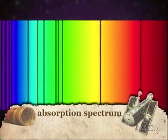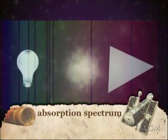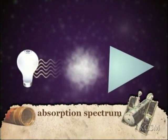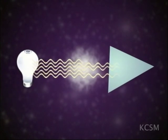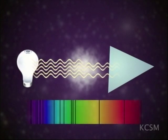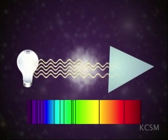The third type of spectrum identified by Kirchhoff is the absorption or dark line spectrum. This occurs when a cold gas is between an observer and a source of continuous light. The gas absorbs the light that has the correct energies to boost its electrons to its various energy levels. All other light passes through, and by the time the light reaches the observer, those absorbed energies have been removed and appear as gaps in the spectrum.